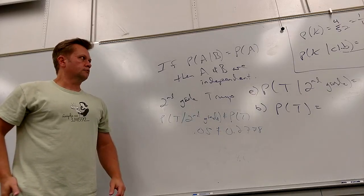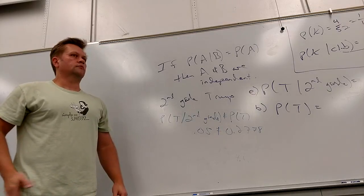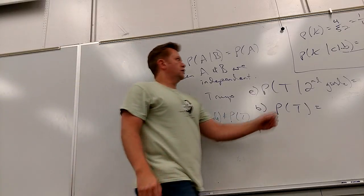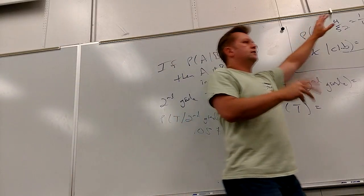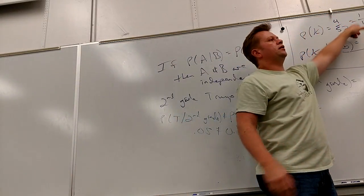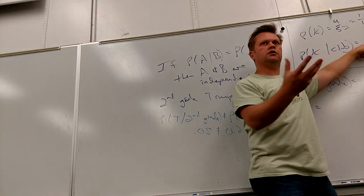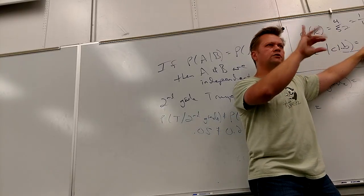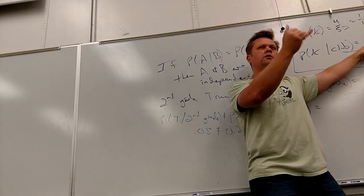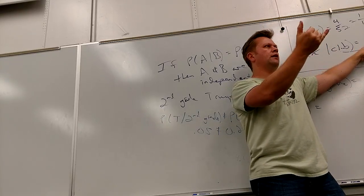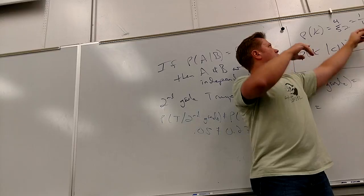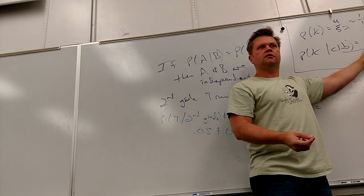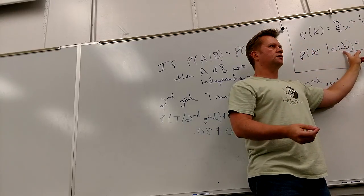If they're equal to each other then it's independent; if they're not equal to each other, it's dependent. Think about it like this: if the probability doesn't change, they're independent. That's the right way to think about it.